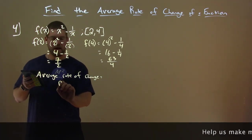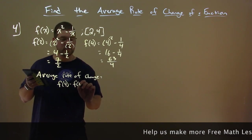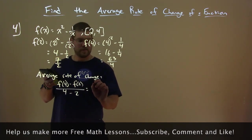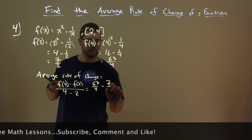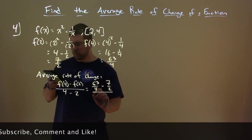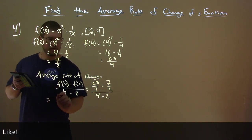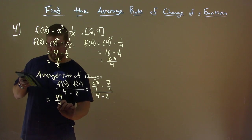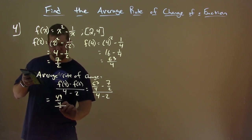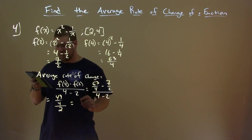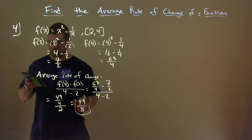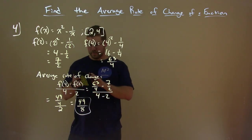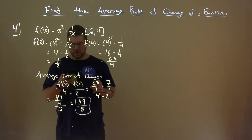The average rate of change equals f(4) minus f(2) over 4 minus 2 — change in y over change in x. That's 63/4 minus 7/2, over 4 minus 2. 63/4 minus 7/2 is 49/4, and 4 minus 2 is 2. This simplifies to 49/8. So the average rate of change over the interval from 2 to 4 is 49/8.